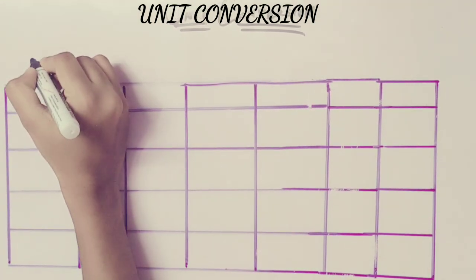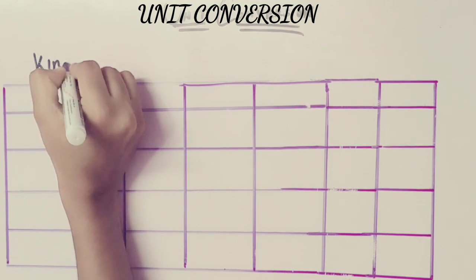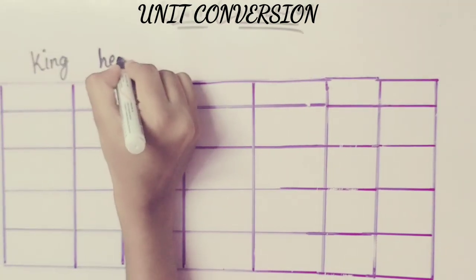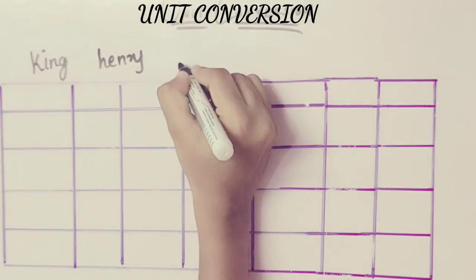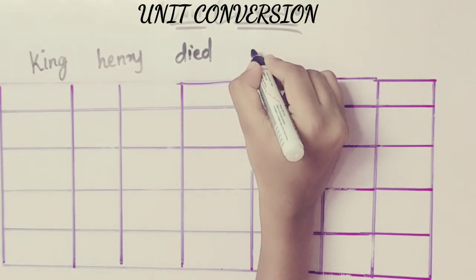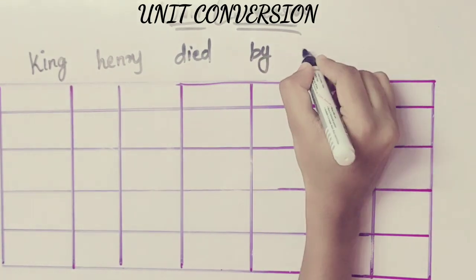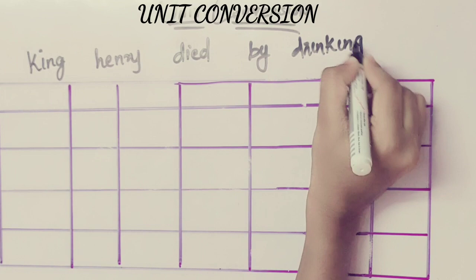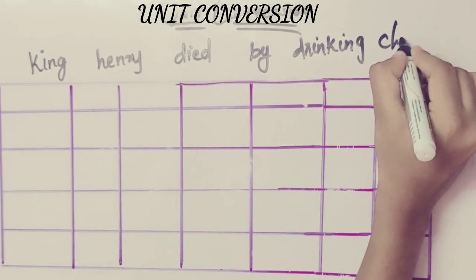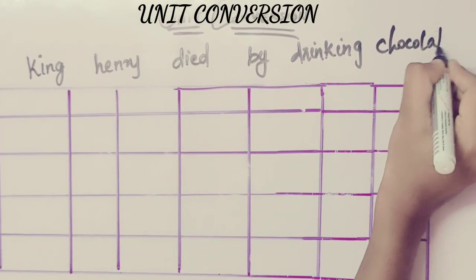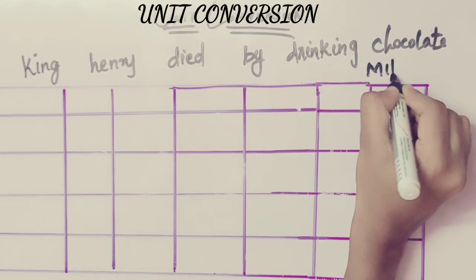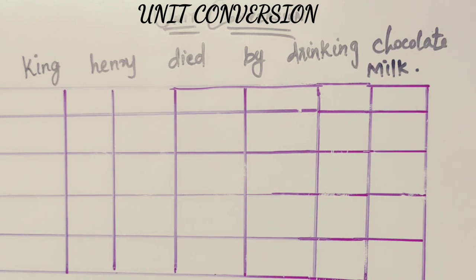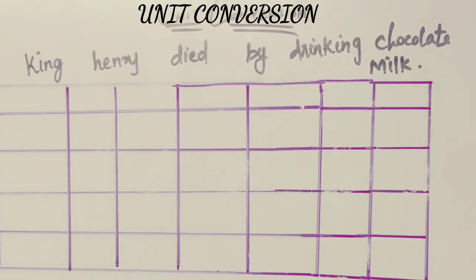Now, it's the main sentence: King Henry Died By Drinking Chocolate Milk. This is the key sentence for unit conversion.